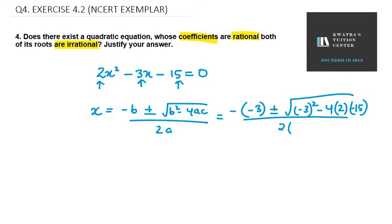c is -15 over 2a. a is 2. So we get positive 3, minus and minus gets cancelled out. Positive 3 ± √(9 - minus minus + 120) over 4. So we get 2 values.